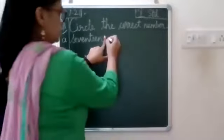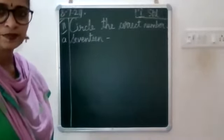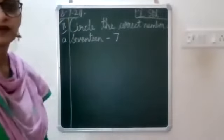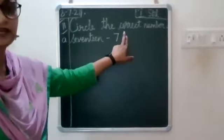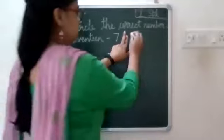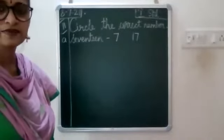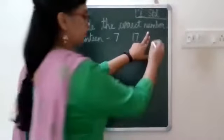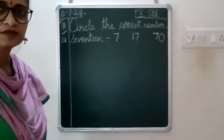Then leave a finger space, put a small dash, leave a finger space, put a small dash, and then leave one finger space, write the number 7. Then leave two finger spaces, write the number 17. Then again leave two finger spaces, and then write the number 70.